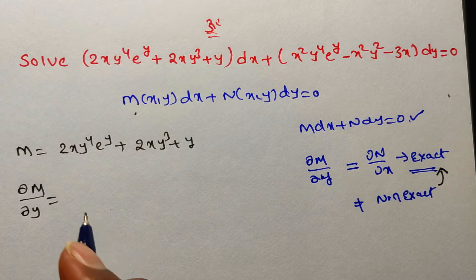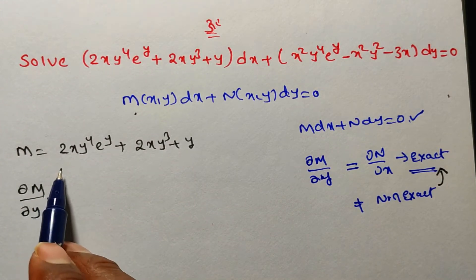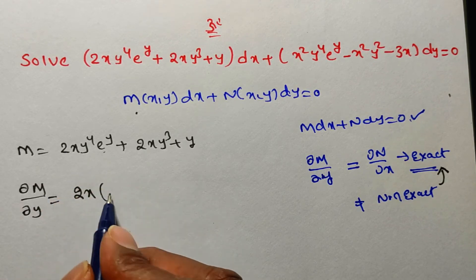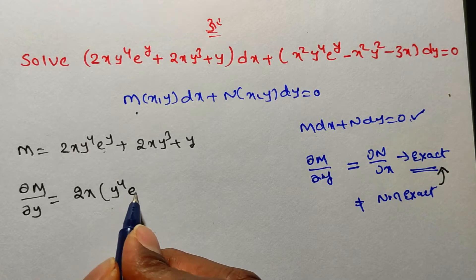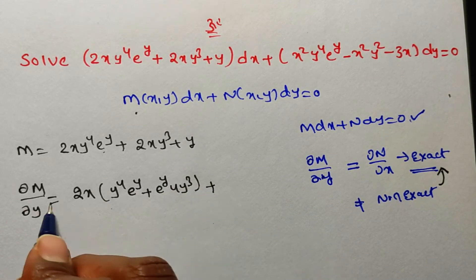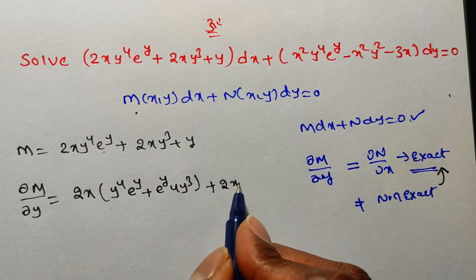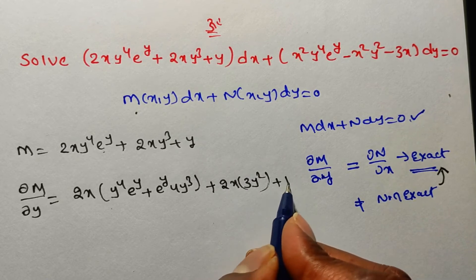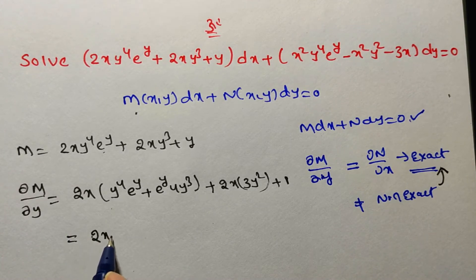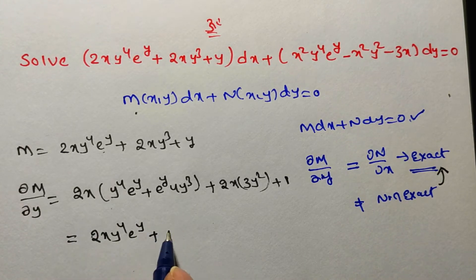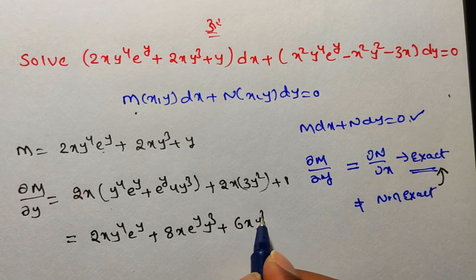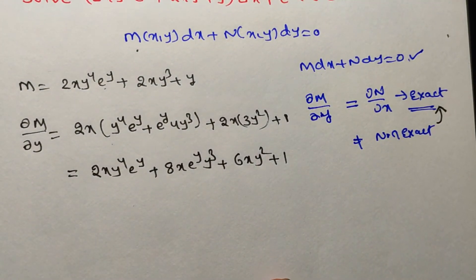While differentiating M partially with respect to y, we treat all other variables as constant. So 2x is constant. We apply the UV product rule: first term times derivative of second (eʸ derivative is eʸ) plus second term times derivative of y⁴ (which is 4y³), plus 2x times 3y² (from 2xy³), plus 1 (from y). Simplifying: ∂M/∂y = 2xy⁴eʸ + 8xeʸy³ + 6xy² + 1.